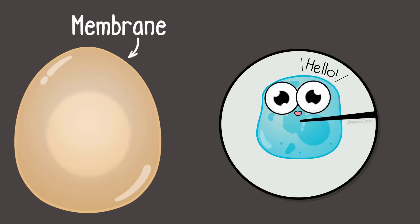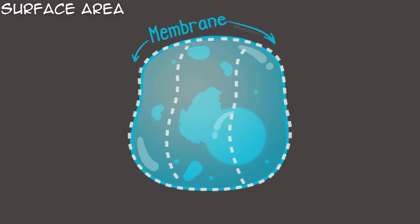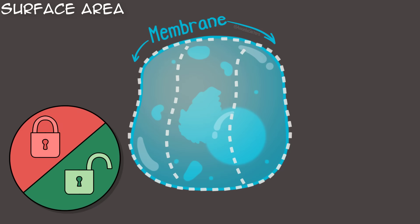A cell could never be as large as a single chicken egg, though. It turns out surface area is a very important thing. Surface area determines the surface measurements of that cell membrane, and the cell membrane controls what goes in and out of cells.